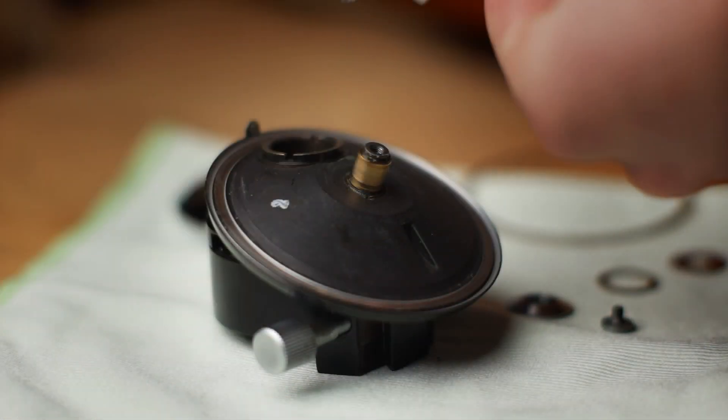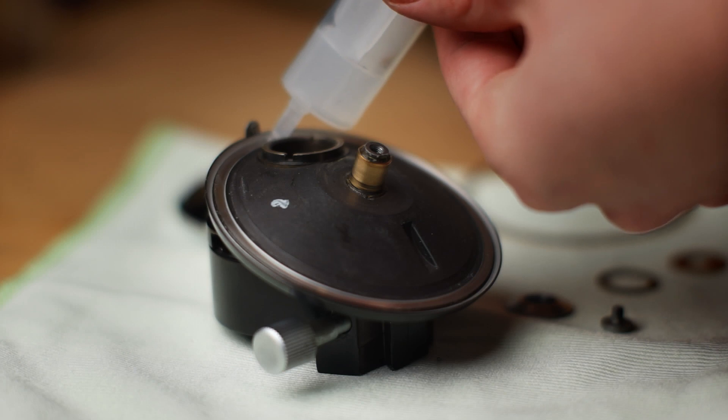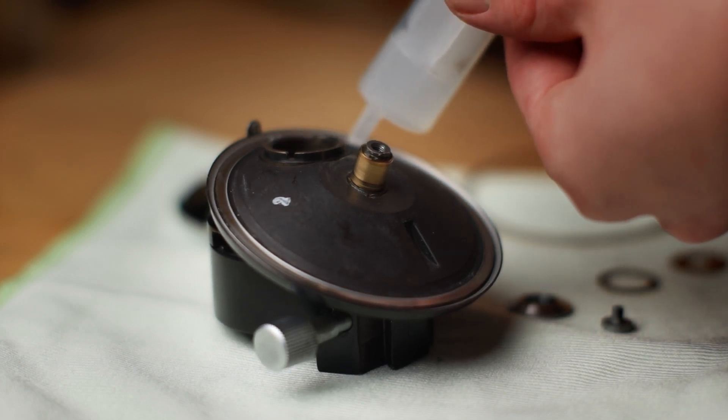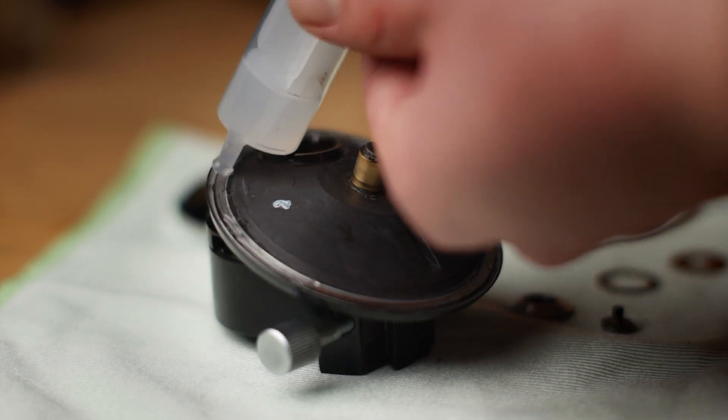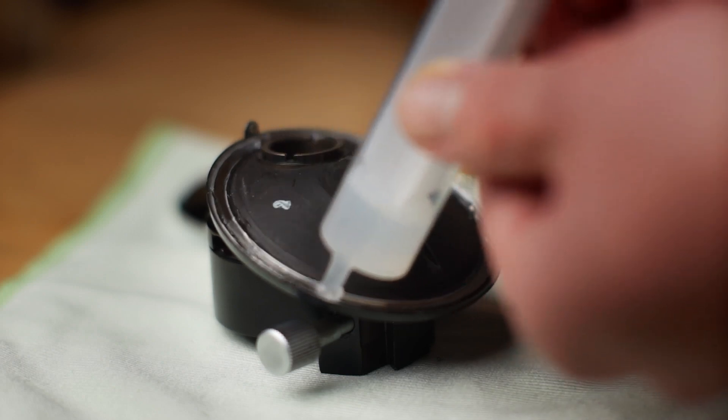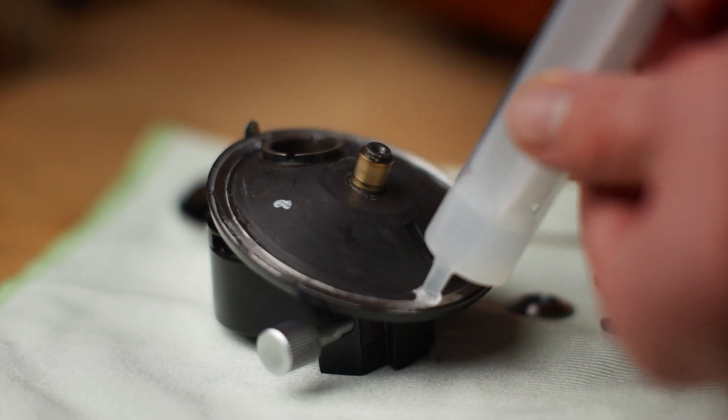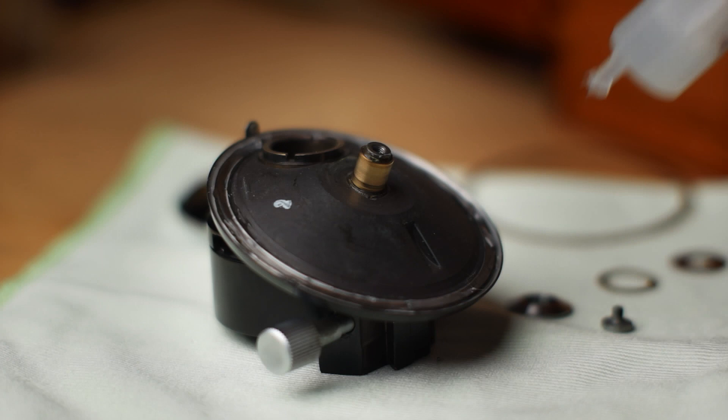Once all bearing parts were cleaned and degreased, I applied silicone grease to the lower race of the lower bearing. Note that using silicone grease is not recommended, as it dampens the movement too much. I later changed the grease to oil.